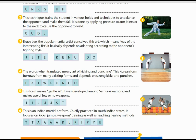This form means 'gentle art.' It was developed among samurai warriors and makes use of few or no weapons. The answer is Jiu-Jitsu — J-U-J-I-T-S-U.